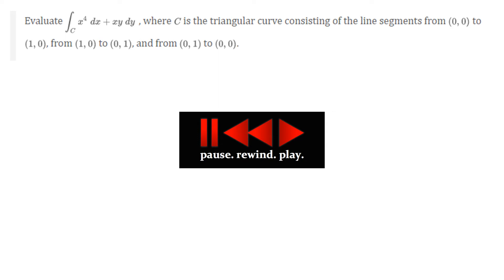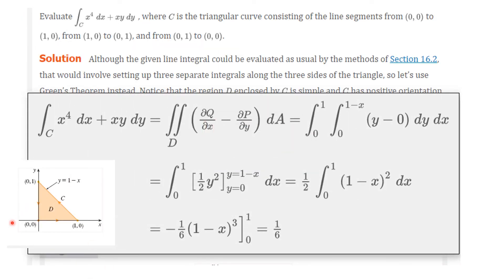The first thing you must do is draw the region. We can see C going around the outside with proper positive orientation, and D is inside. This is a line integral, and we could parametrize it, but we're going to use Green's Theorem to evaluate it. So P(x,y) = x⁴ and Q(x,y) = xy. The line integral equals the double integral over D of the partial of Q with respect to x minus the partial of P with respect to y, dA. Fixing x, y will go from 0 to 1 minus x.